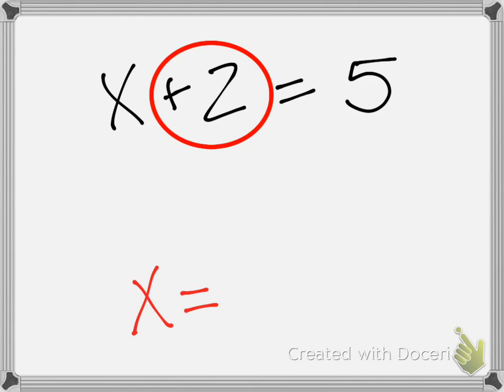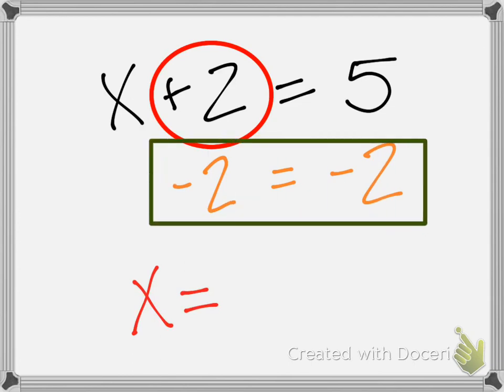I do that by doing the opposite. Excellent. Because what we do to one side, we do to the other. This right here is our true fact: negative 2 equals negative 2. Then, what's positive 2 minus 2? It's 0. It goes away. Now we're left with just our x equals.